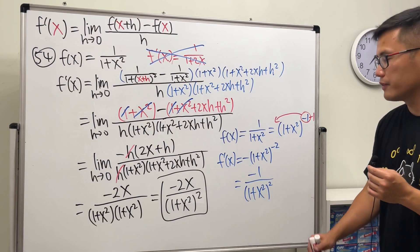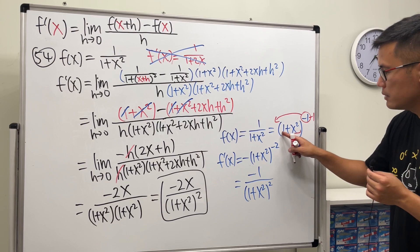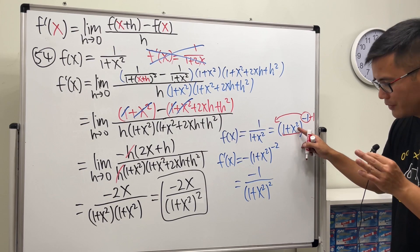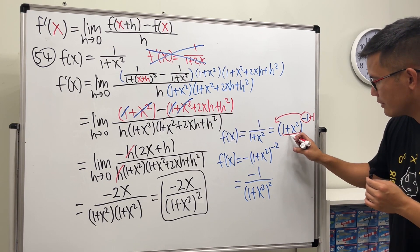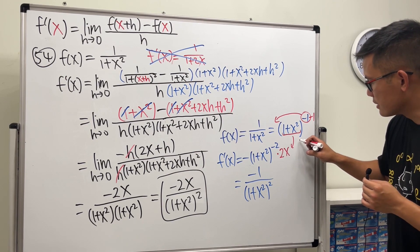The derivative of 1 is 0, but the derivative of x squared is 2x. So we have to multiply this by 2x. This is the so-called...